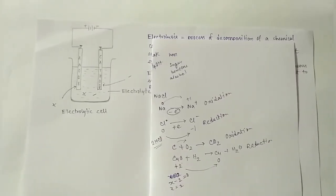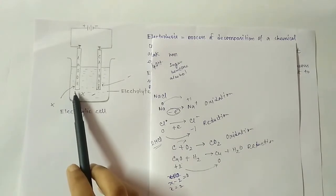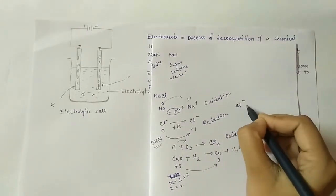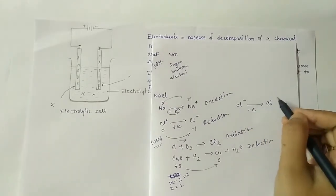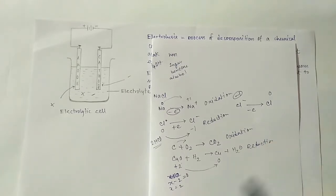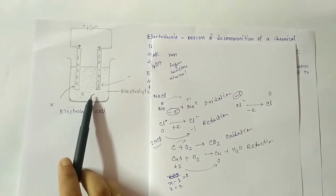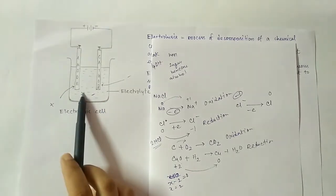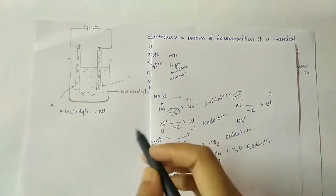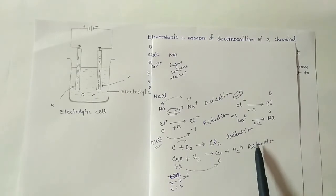Since the anode is a positively charged electrode, negative charges move to it. In NaCl solution, the chloride ion moves to the anode and donates its one electron to the anode, becoming a neutral chlorine atom. The oxidation number increases - so this is oxidation. At the cathode, being negatively charged, all positive charges move there. Na+ accepts one electron from the cathode and becomes Na - the oxidation number decreases, so this is reduction.